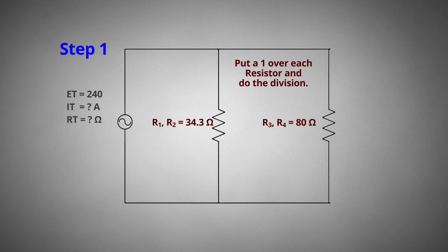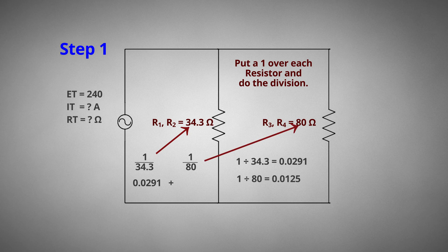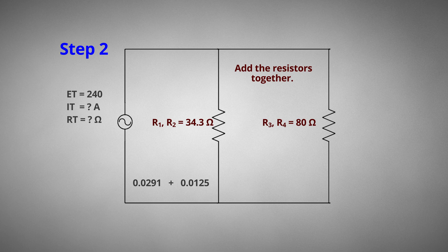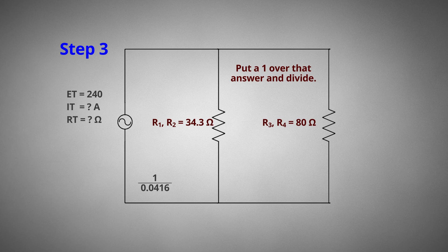Step 1: put a 1 over each resistor and do the division — 1 divided by 34.3 equals 0.0291; plus 1 divided by 80 equals 0.0125. Step 2: add the resistors together — 0.0291 plus 0.0125 equals 0.0416. Step 3: put a 1 over that answer and divide — 1 divided by 0.0416 equals 24 ohms of total resistance.